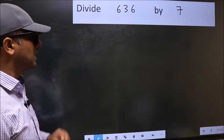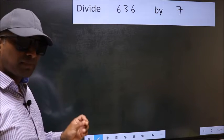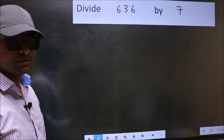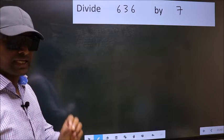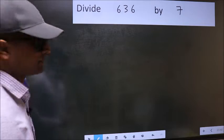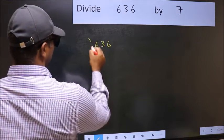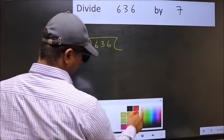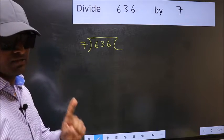Divide 636 by 7. While doing this division, many do this mistake. What is the mistake that they do? I will let you know. But before that we should frame it in this way. 636 and 7 here. This is your step 1.